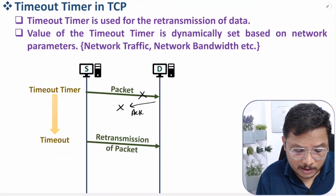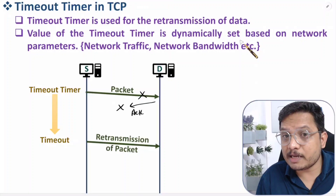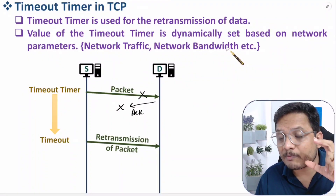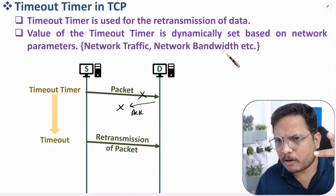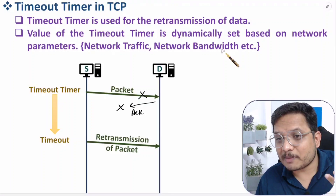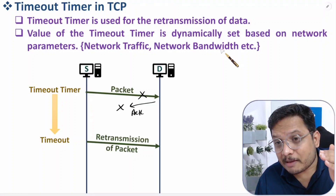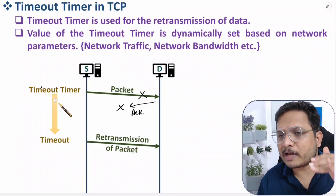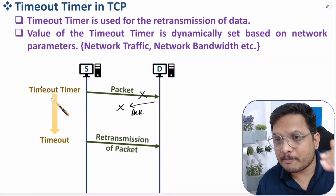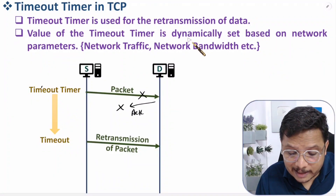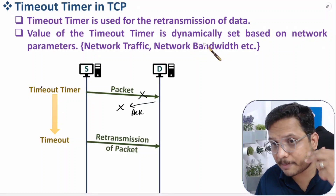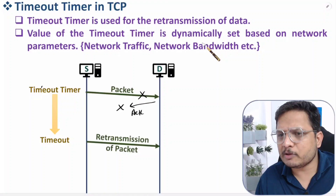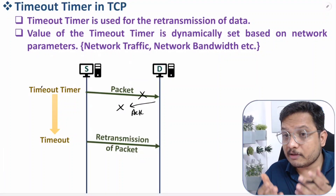The value of the timeout timer is dynamically set based on network parameters. For example, at night when network traffic is low, the timeout timer value will be lower. During daytime when more users are active on the network, the timeout timer value will be higher due to increased possibility of retransmission. I will make a separate video explaining the algorithm used to dynamically set the timeout timer value.